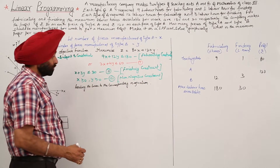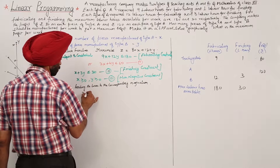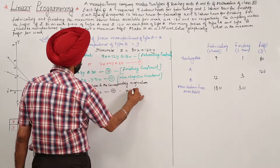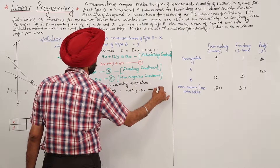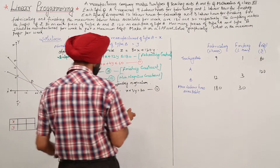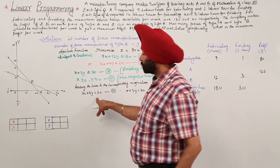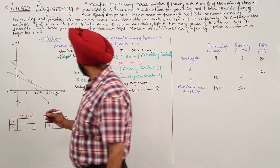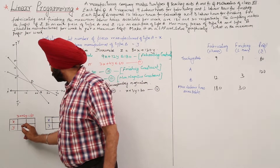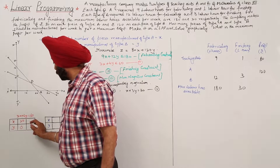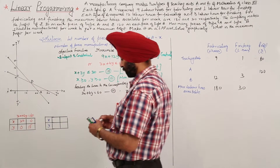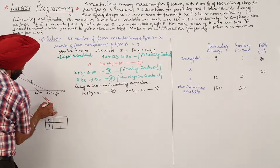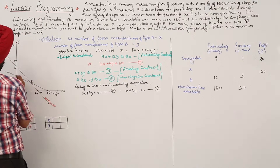Converting inequations to equations for graphical solution: equation 4 is 3x + 4y = 60, and equation 5 is x + 3y = 30. For equation 4: when y = 0, x = 20, and when x = 0, y = 15. So we plot the line 3x + 4y = 60 using points (20, 0) and (0, 15).